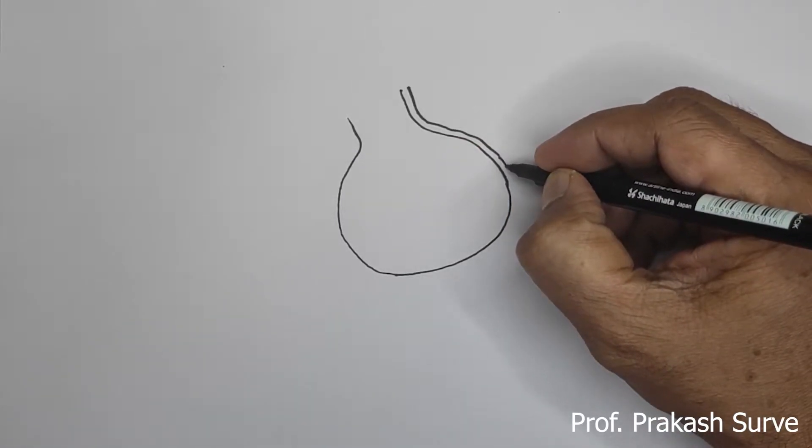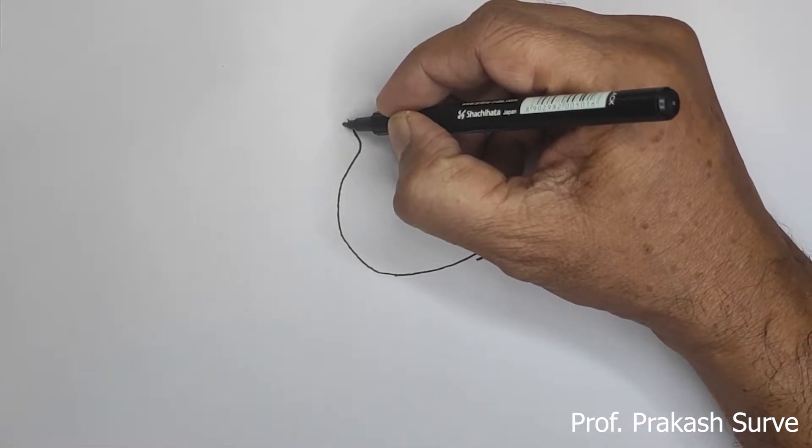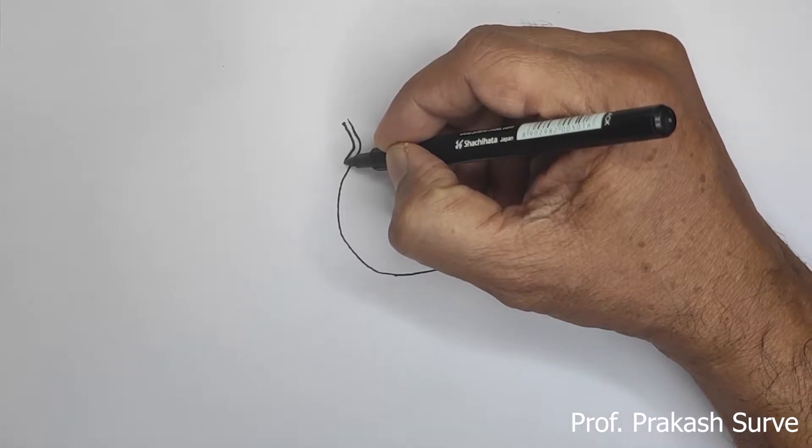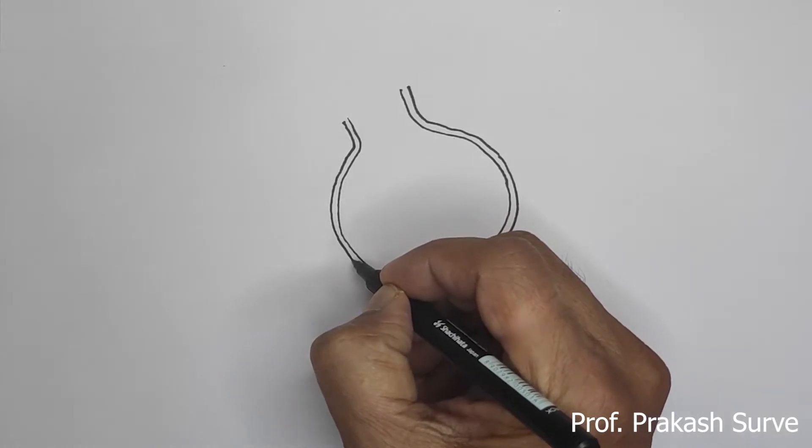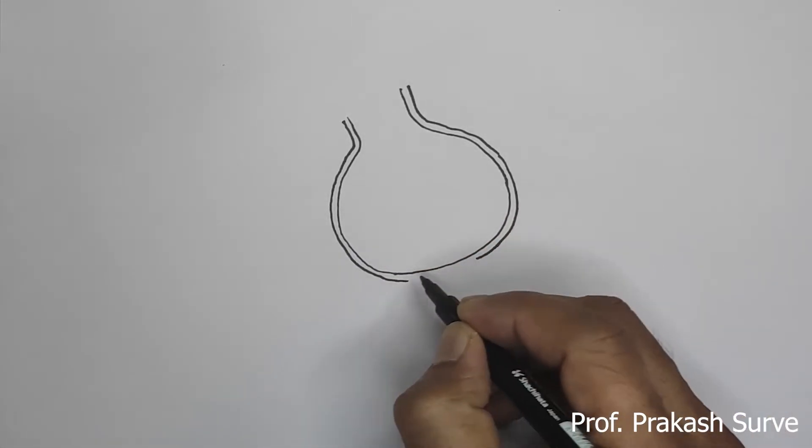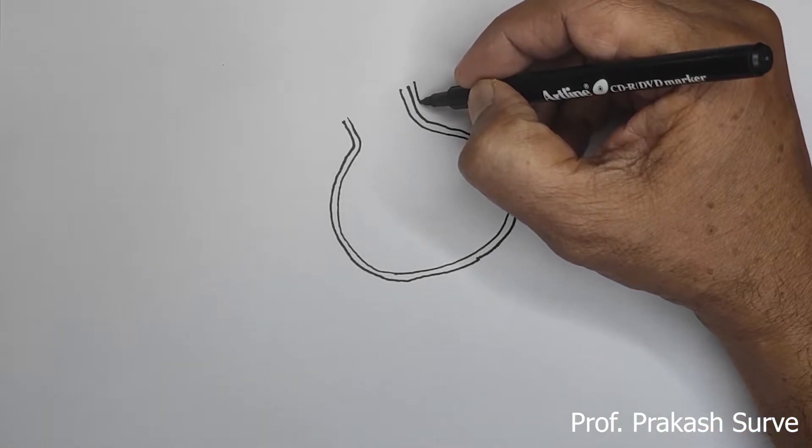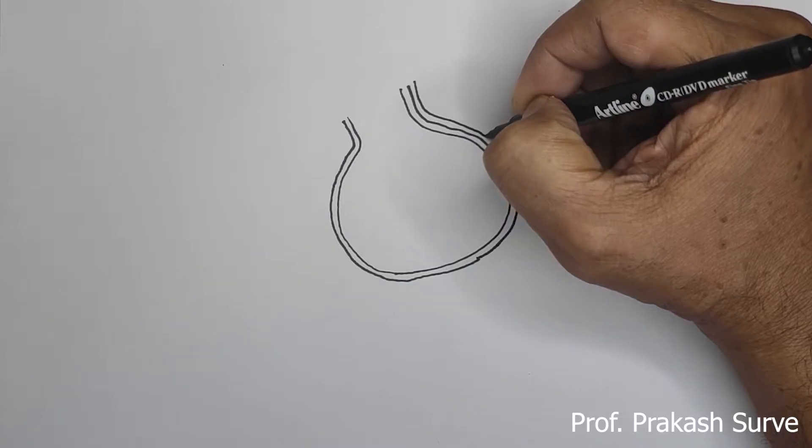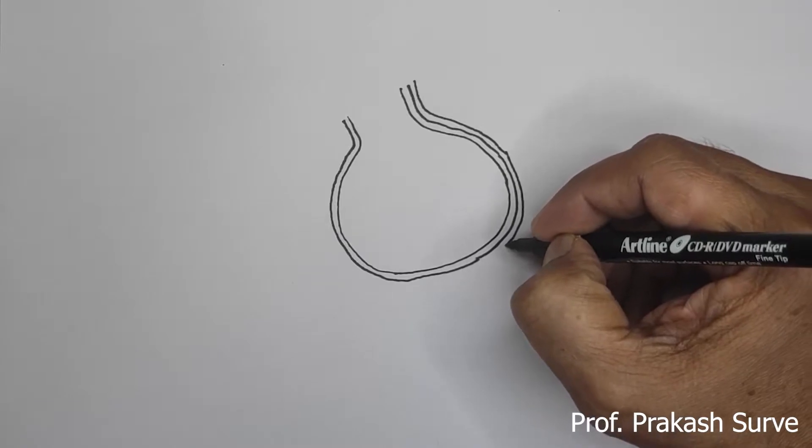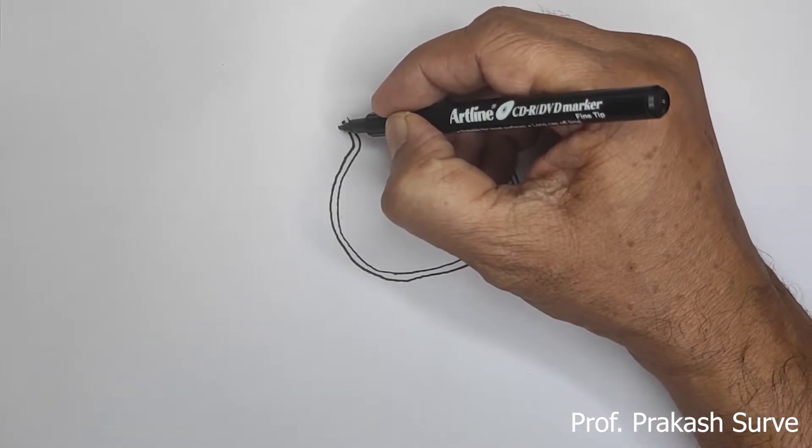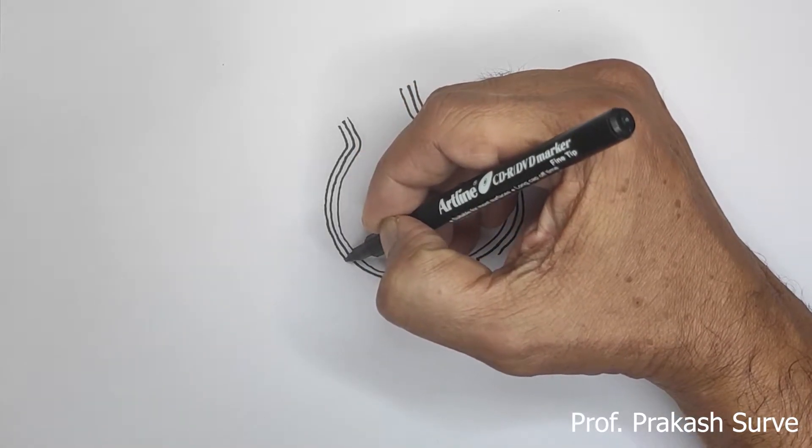For the respiratory membrane, this is made up of simple squamous epithelium. So draw the corresponding line which forms one of the membranes. Now draw the corresponding line for another membrane, which again is for the simple squamous epithelium.